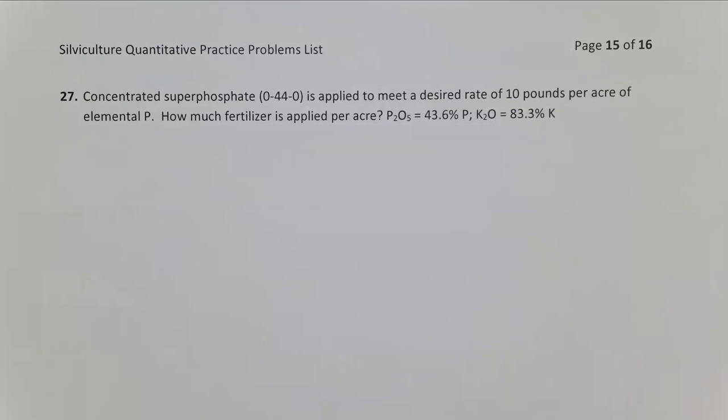So remember the key to all these problems, the most common mistake we see, you always have to apply more fertilizer than the element. It's not possible with physics to apply 100 pounds of fertilizer and get 150 pounds of an element out there. That does not make sense.